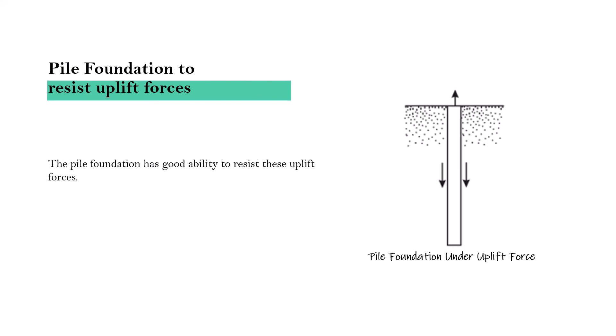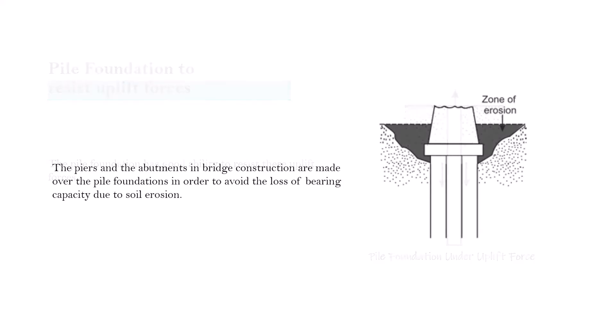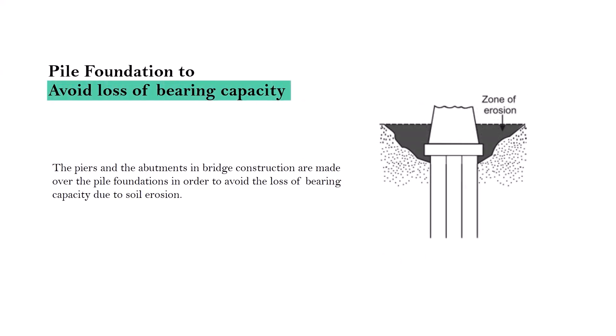Number five: Pile foundation to avoid the loss of bearing capacity. The piers and abutments in bridge construction are made over pile foundation in order to avoid the loss of bearing capacity, if any. This is commonly an issue when we make use of shallow foundations.